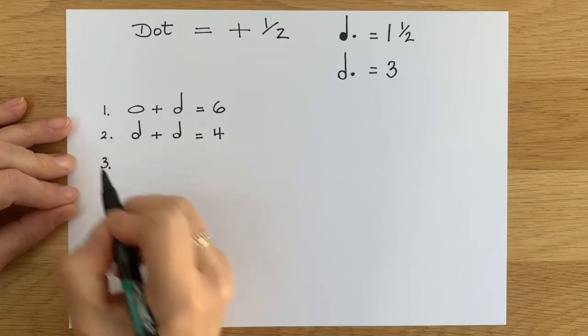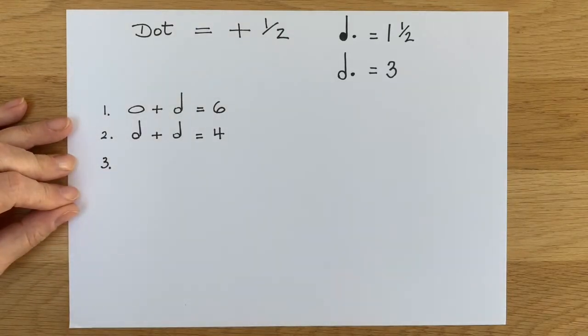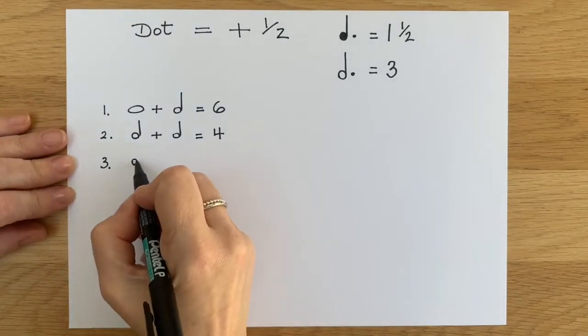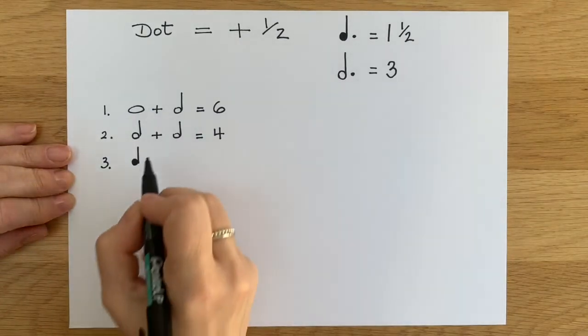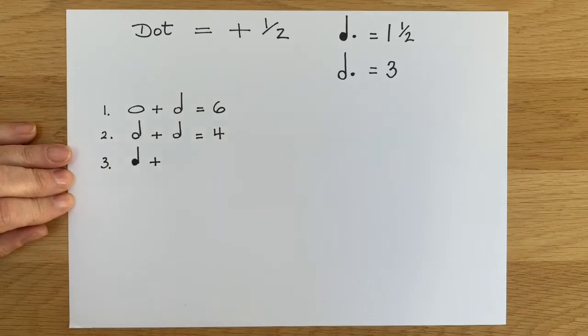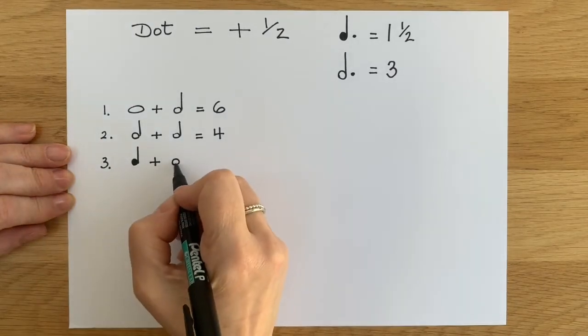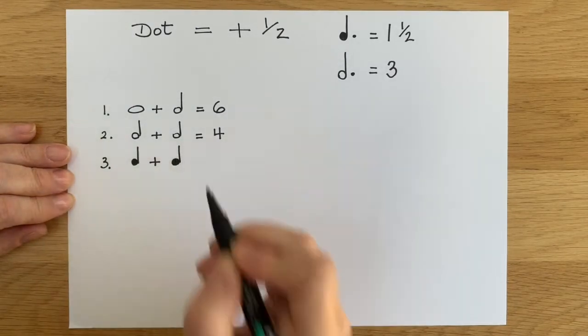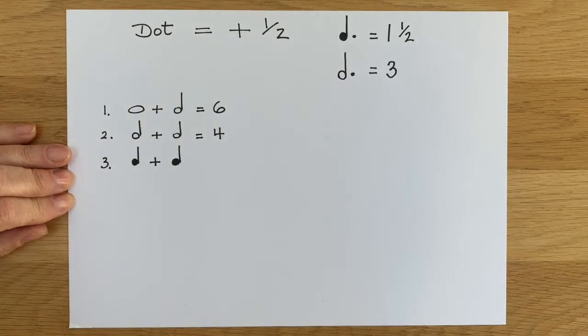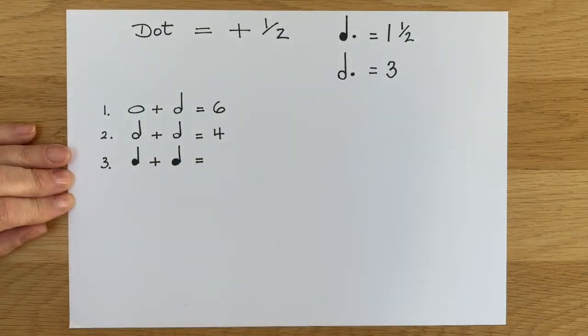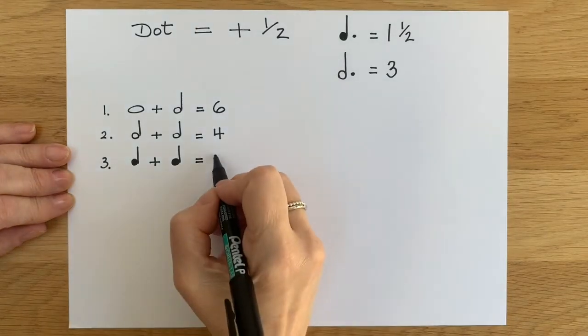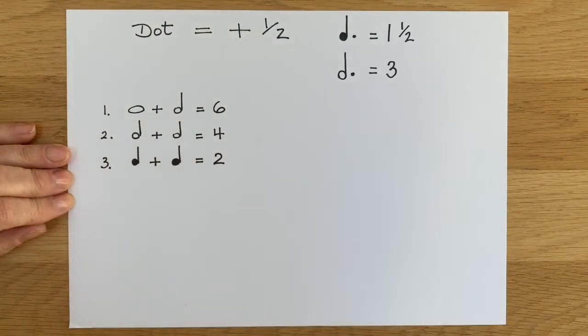So here's number three. The first note is a crotchet. And then that crotchet is followed by another crotchet. So how many beats is that now altogether? Crotchet is worth one. There you go, one and one is two.